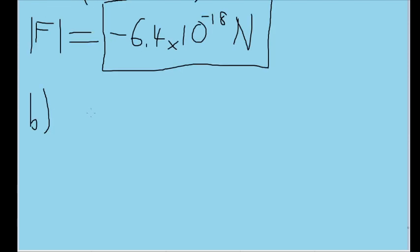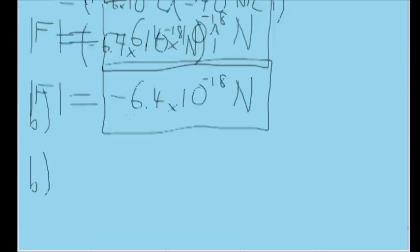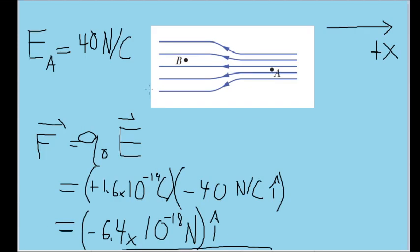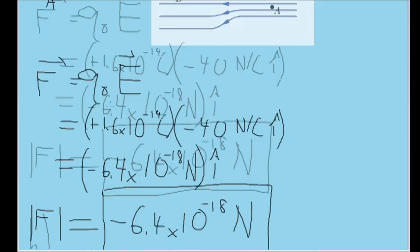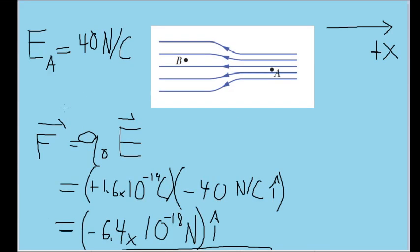Part B of the problem asks us to find the magnitude of the electric field at point B. Based on conventions that electric field lines follow, the crowdedness or the density of field lines are intended to be proportional to the strength of the field itself. Since the field lines at B are separated twice as much as the field lines at point A, we can assume that the electric field at A, or E sub A, is equal to twice E sub B, the electric field at B.